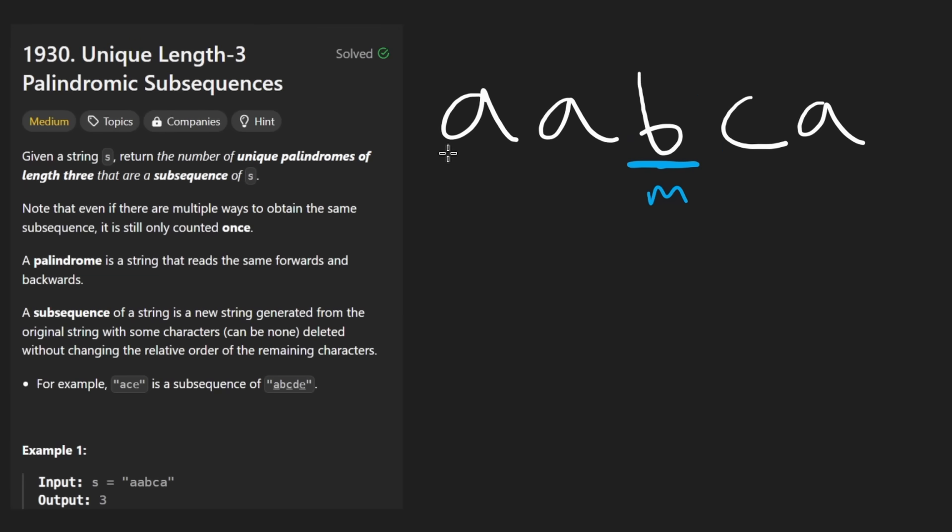How do I know how many palindromes I can form with this guy as the middle character? Well, here's what I would do. I'll just go through every character on the left side. Let's say I see an A. Well, now I want to know, do I have any A's on the right side? And it turns out we do. So we have one here. So we found a palindrome.